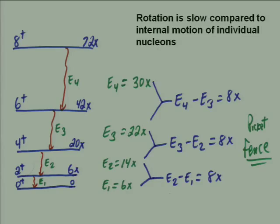If I populated the eight-plus level, I'd expect gamma rays stepping down: eight-plus to six-plus, six-plus to four-plus, four-plus to two-plus, two-plus to ground state. The energy of each gamma ray is just the difference between excitation energies of the two states. We can predict the energies between successive states, and the differences between successive gamma rays turn out to be all the same — reflecting a constant moment of inertia as the nucleus spins.